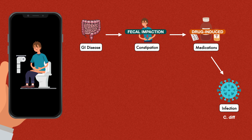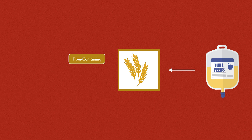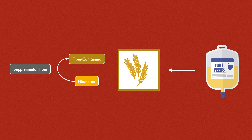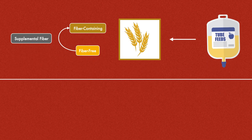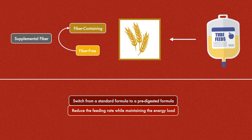If there's no fecal impaction, evaluate the medications list — change liquid medications to tablet form, discontinue any laxatives or stool softeners, and see if the patient is receiving antibiotics. If none of these are applicable, or if diarrhea persists after changes are made, check for any possible sources of infection, including C. diff. If there's no infection and the diarrhea persists, then the formula can be changed. Start by looking at the fiber content — if the formula is fiber-containing, switch to a fiber-free formula. If it's already fiber-free, try one with soluble fiber or add a soluble fiber supplement like psyllium husk. Beyond fiber, you could switch to a predigested formula, reduce the feeding rate while maintaining the energy load, or trial a plant-based hypoallergenic formula like Kate Farms or Complete.